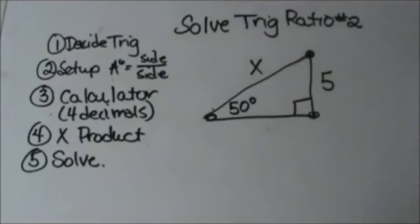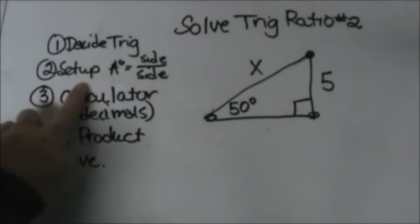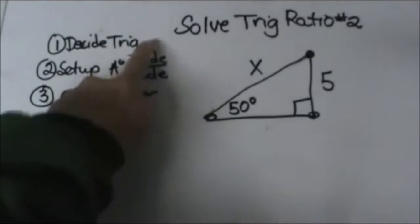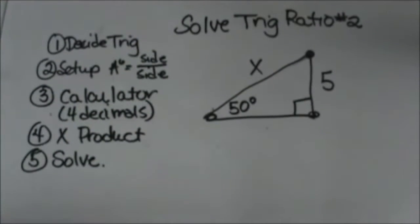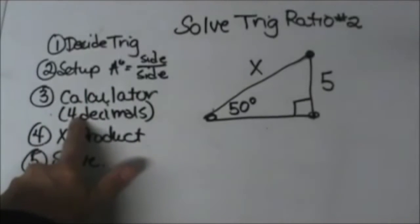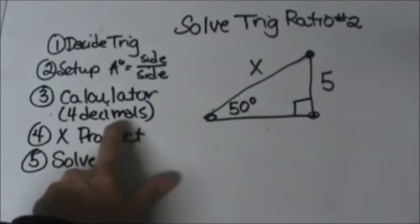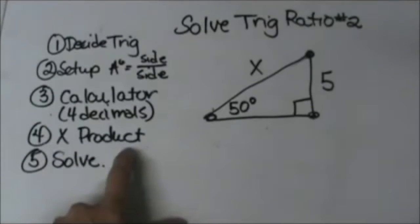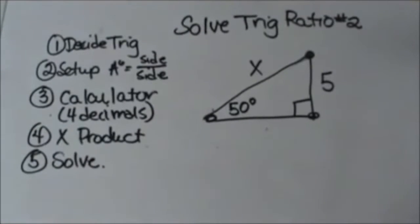First, you're going to decide which trig ratio you are dealing with. Then once you decide your trig ratio, you're going to set it up with the angle and the ratio of the two sides. After you set it up, you're going to use your calculator to change the trig ratio into a decimal with four decimal places. You're going to throw one underneath that decimal and use cross products, and then you're going to do any solving.